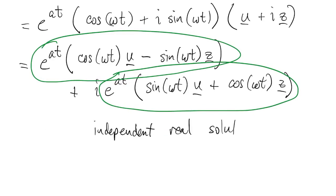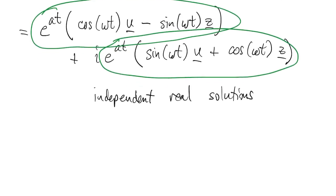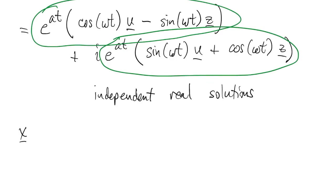So we can take two complex exponentials with conjugate eigenvalues, or we can take these two real things that were the parts of one of those complex exponentials. Either way, we get equivalent but different-looking expressions for the general solution.